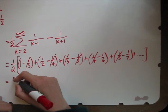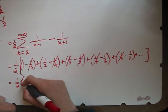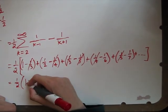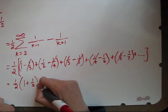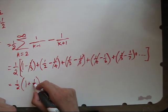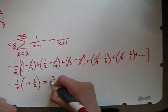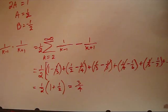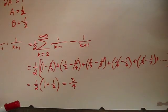So our sum is going to be 1 half times, so I have a 1 plus 1 half. This is 3 halves times 1 half makes 3 fourths. This is called a telescoping series.